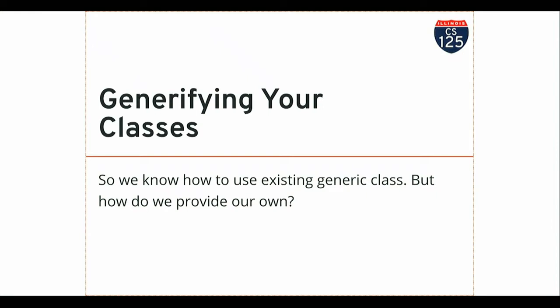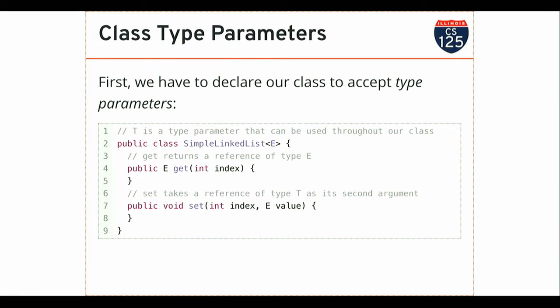We've seen how to use this from the perspective of declaring built-in types. But what if you want to design a container or some class in Java where you want to use this to generify your own classes? One of our examples today: we're going to go back to our simple list that we implemented and actually add this feature — make it generic — so that we can not only use it to store any type of Java object, but make sure that the objects we put into it are of the right type.